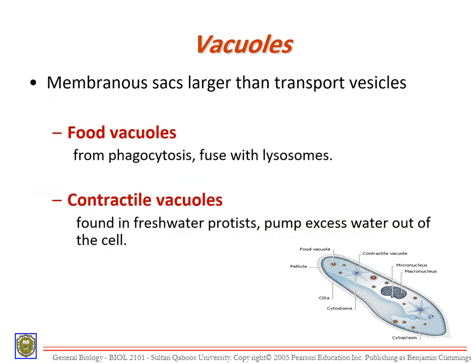So far we spoke about the Golgi body and finished talking about lysosomes. Next we're going to talk about vacuoles. Vacuoles are larger than vesicles. Let's look at the vacuoles, then talk about vesicles, and conclude with mitochondria and chloroplast.